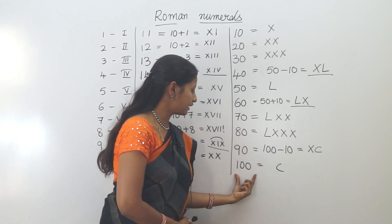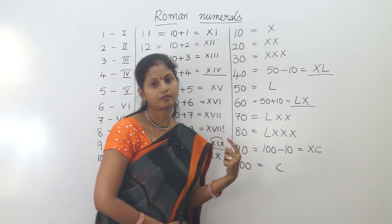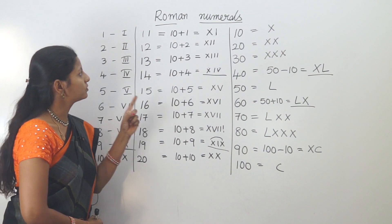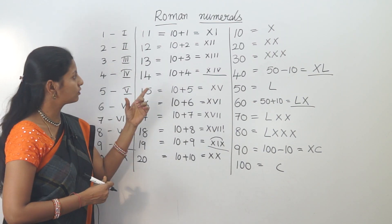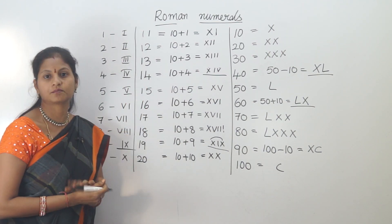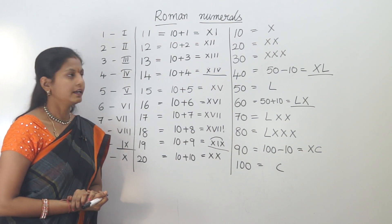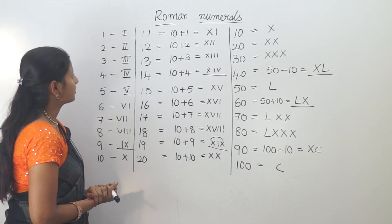Next, 100 is C. Note that Roman numerals do not have zero — we don't use 0 or any special symbol for zero. The main symbols are the key to Roman numerals.